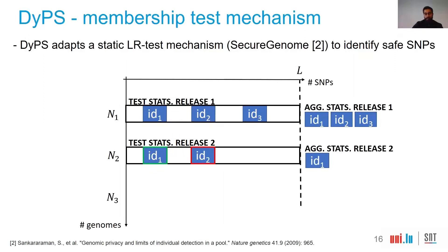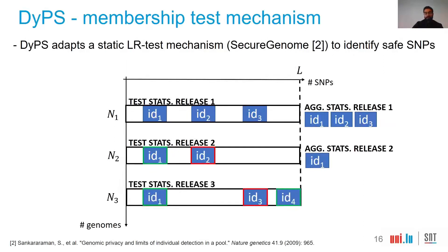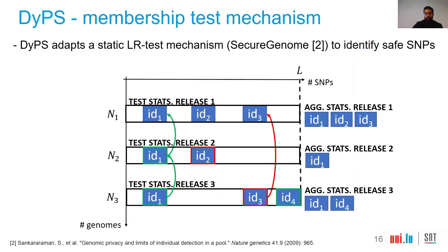In a third release, we again identified which SNPs can be released and verified that when previous releases are combined, the same IDs are found safe — which is the case for ID 1. However, ID 3 did not succeed in the combined evaluation, so we cannot release data over SNP ID 3. ID 4 was never released before, so we can proceed with aggregate statistics releases over ID 4 as well.